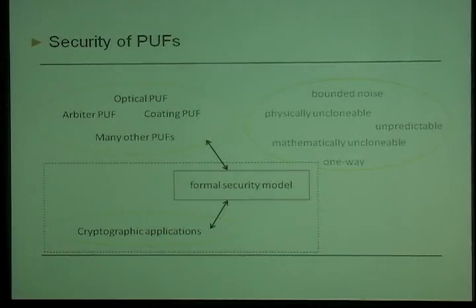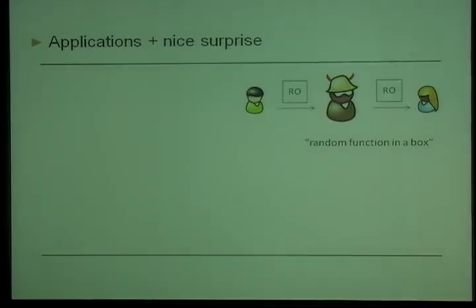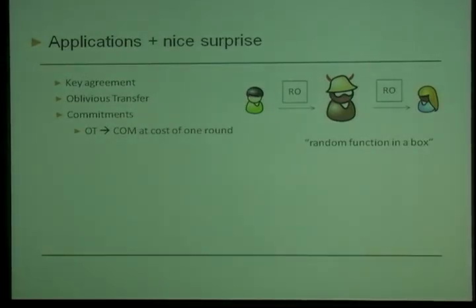Our paper provides such a formal security definition and several cryptographic applications. You can think of PUFs as a random function in a box that you can send to another party and use to construct a cryptographic scheme. We constructed a key agreement scheme, an oblivious transfer scheme, and a commitment scheme. On the way, we found a one-round transformation from oblivious transfer to commitment schemes, which is more efficient than common cut-and-choose techniques.